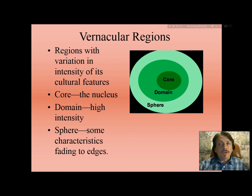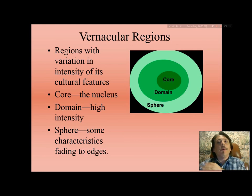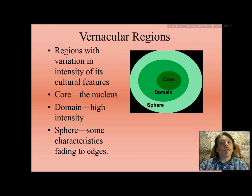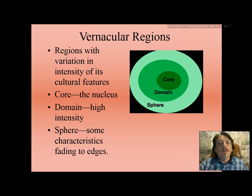The three categories are like a sliding scale of tone from dark intensity that fades to zero. For our purposes, we will use the core, the domain, and the sphere to talk about what is the American Southwest, or El Norte Mexicano.